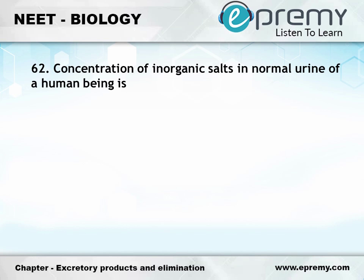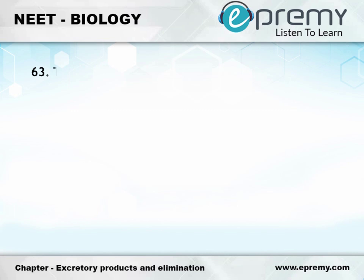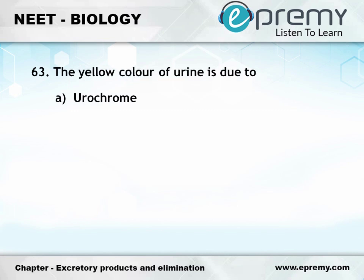Question number 62: Concentration of inorganic salts in normal urine of a human being is — Option A: 0.15%, Option B: 0.25%, Option C: 1.5%, Option D: 2.5%. The answer is Option C: 1.5%.